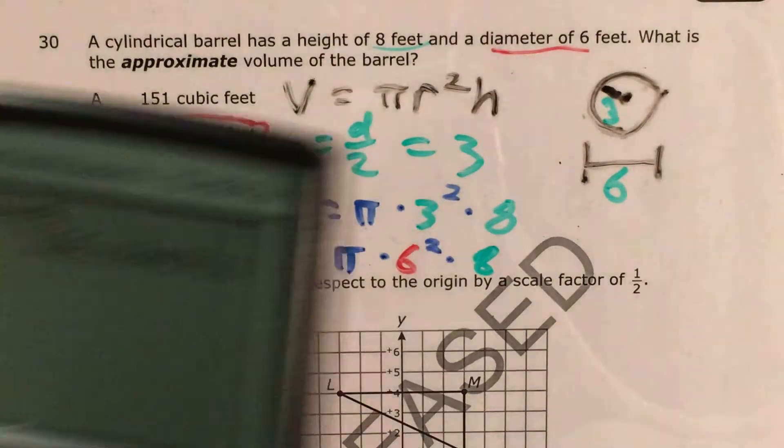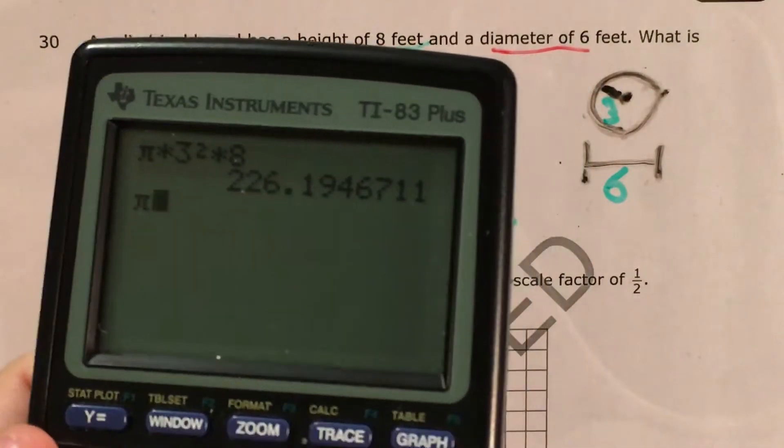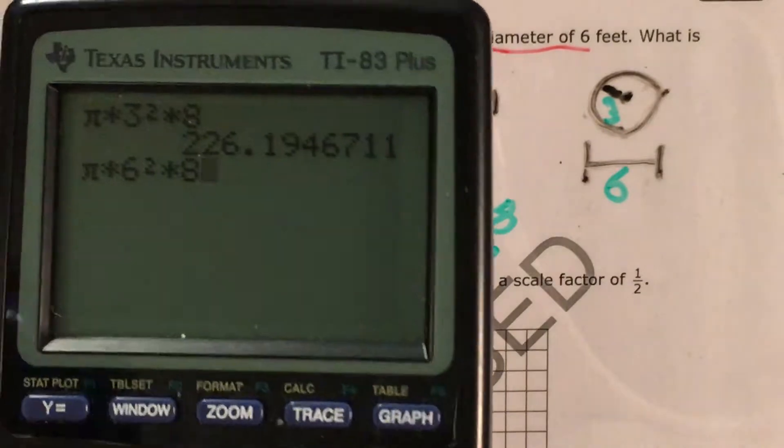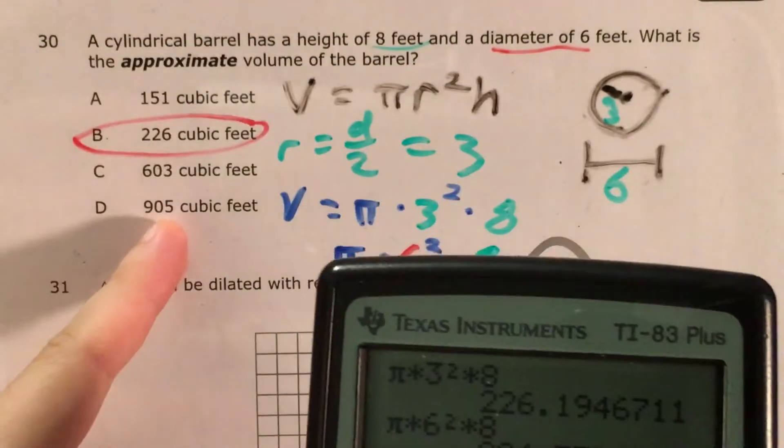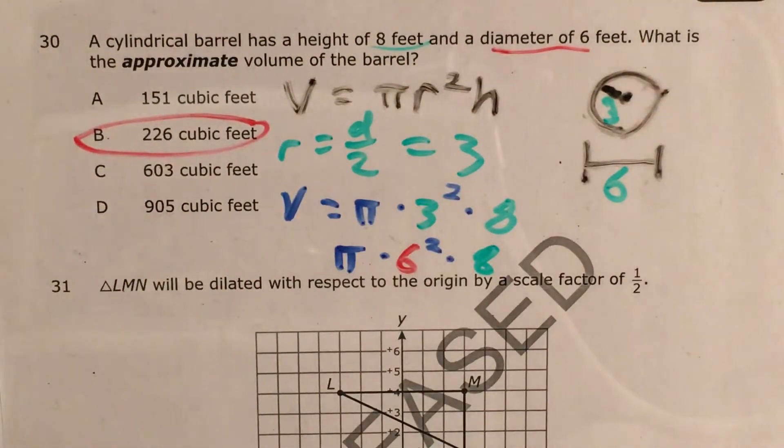Well, I could actually figure that on my calculator again: pi times 6 squared times 8, and it gives me something very close to answer D, 905.